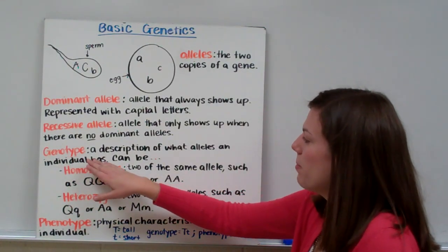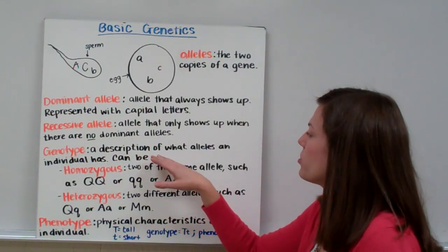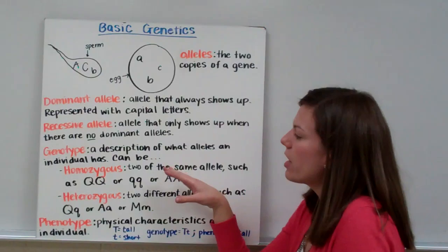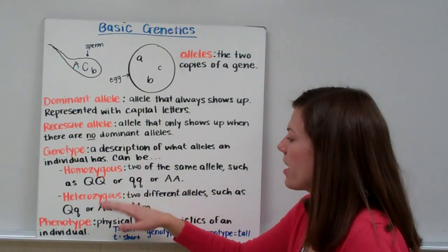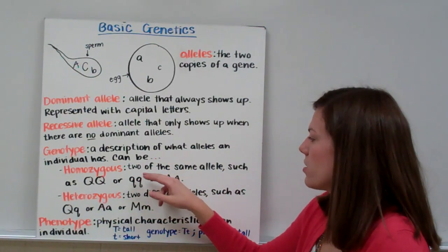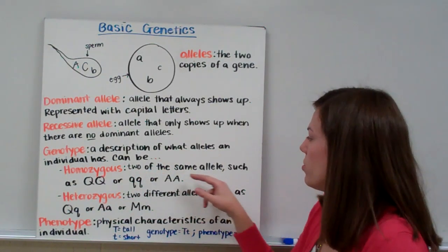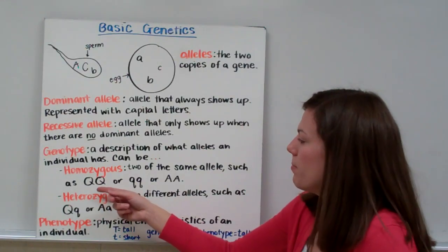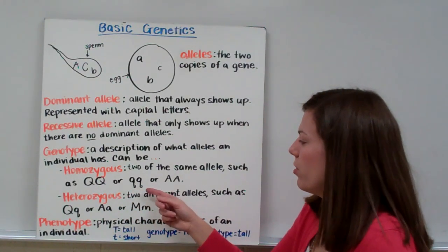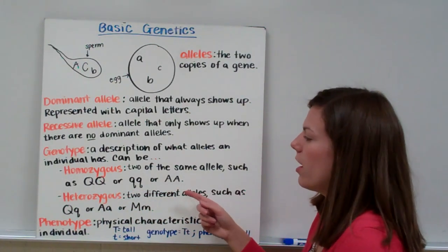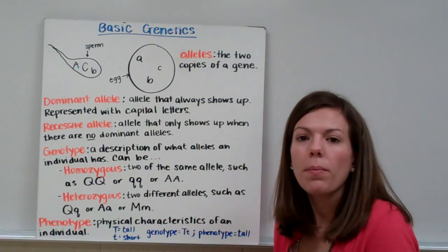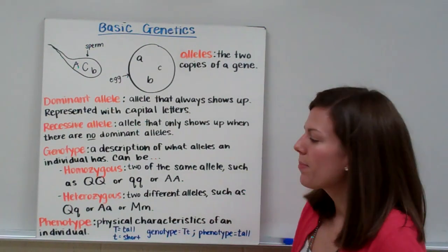Your genotype is a description of what alleles an individual has. Your genotype can either be homozygous or heterozygous. Homozygous is when you have two of the same allele, such as big Q big Q, or little Q little Q, or little A little A — when your letters are either both dominant or both recessive.